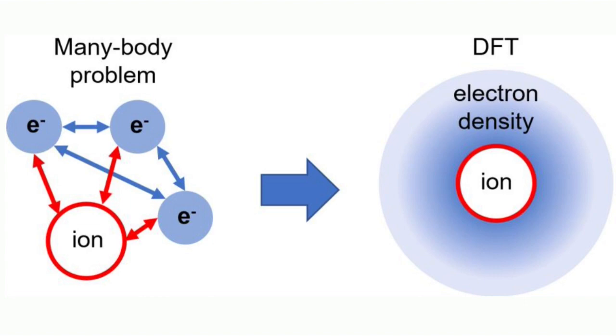In DFT, we use the electron density. Instead of treating electrons separately, we just use an electron density — we just consider an electron density on the iron.